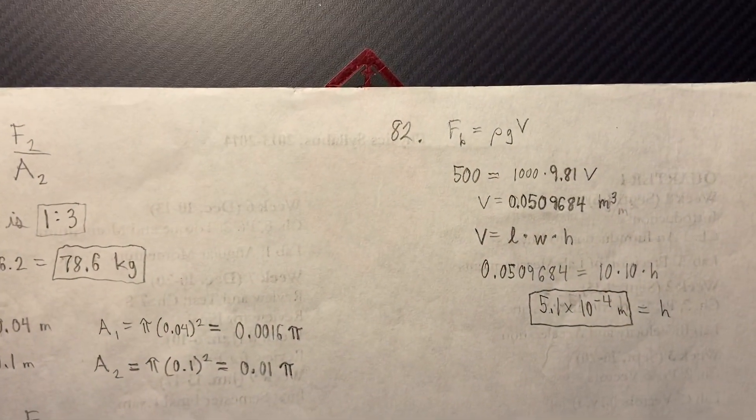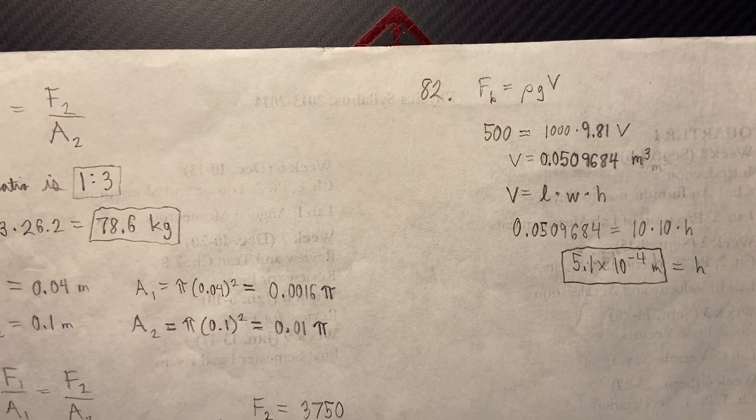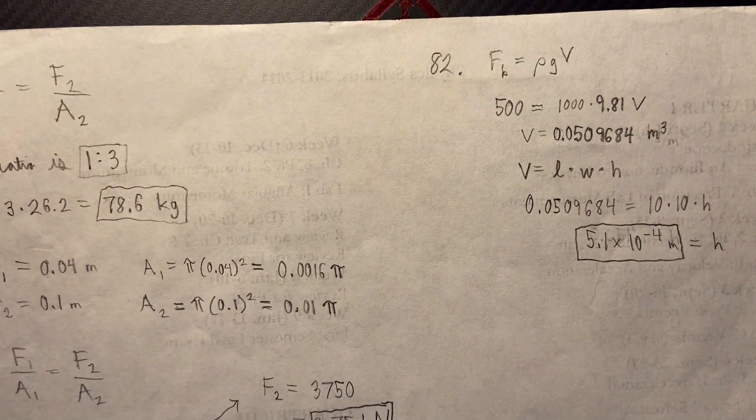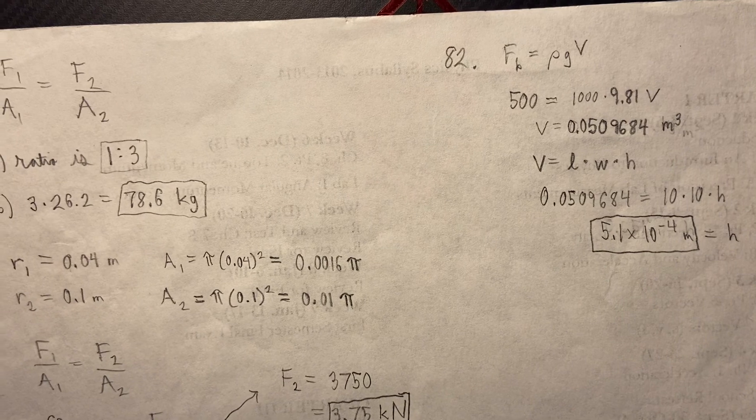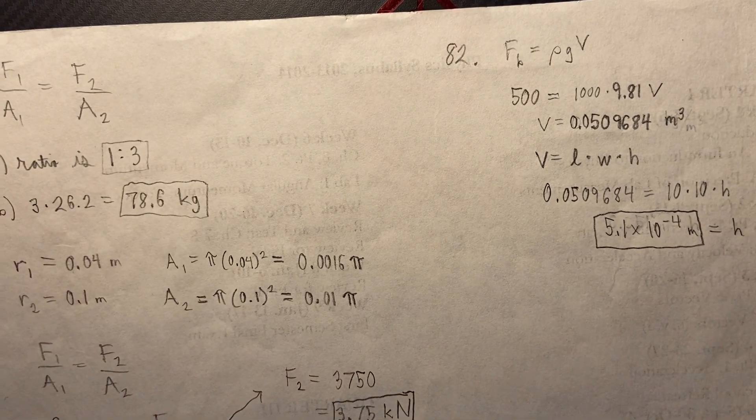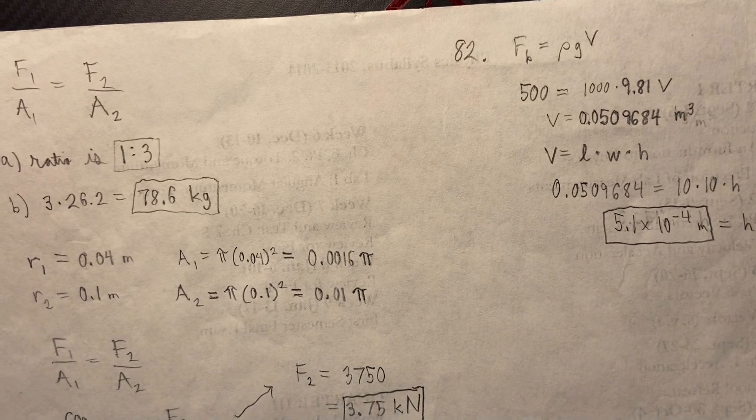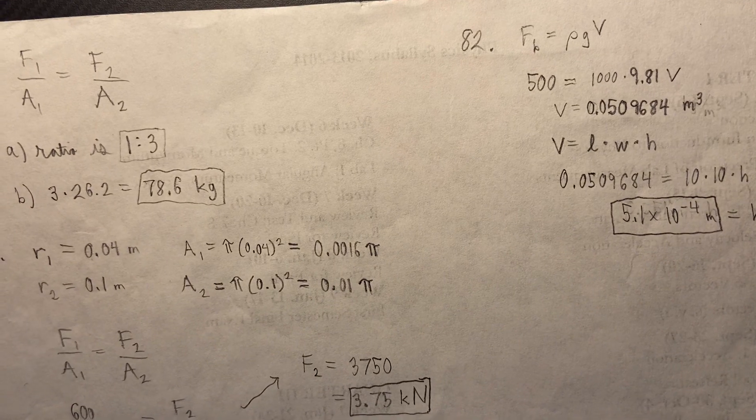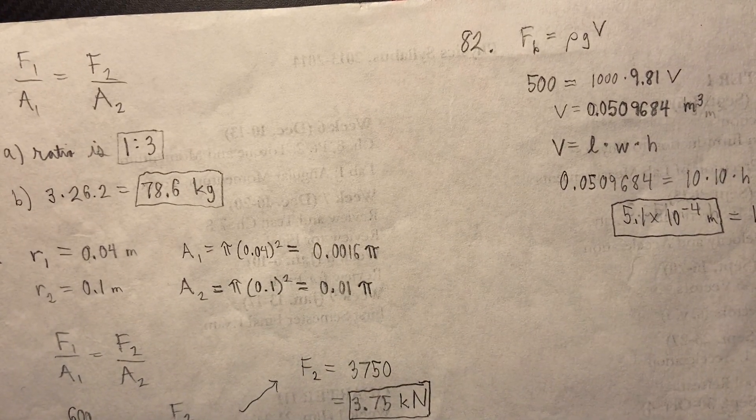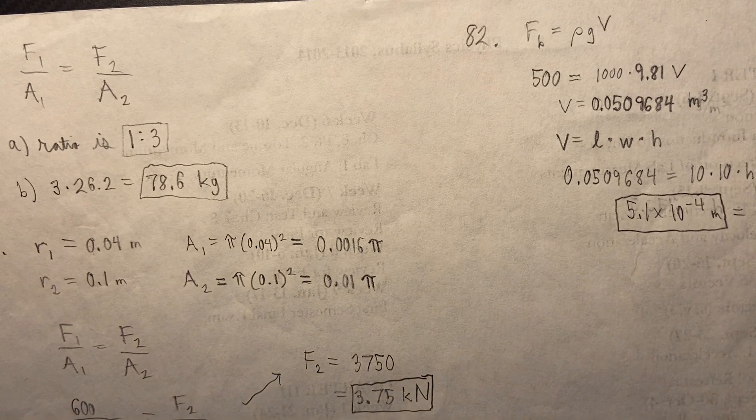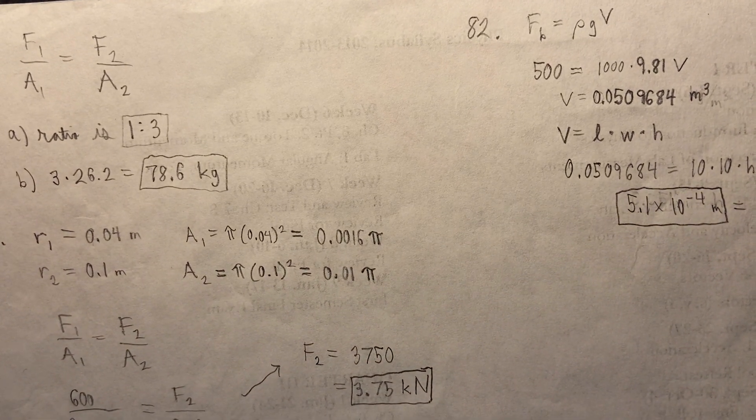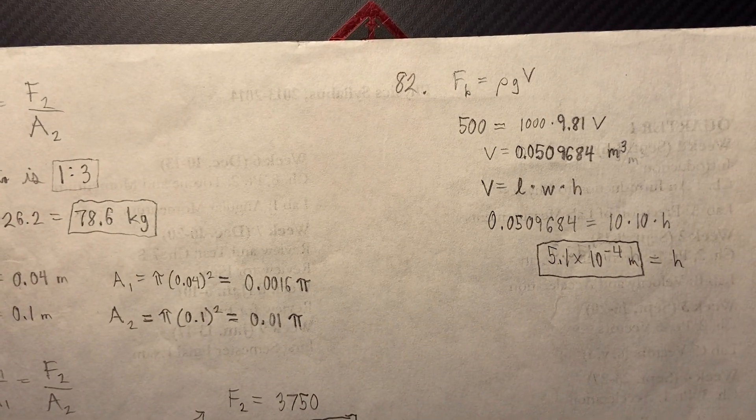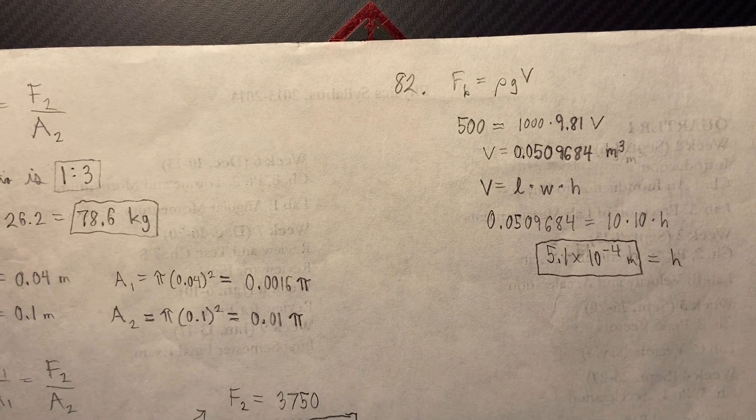Okay, number 82. Again, my buoyant force is rho gv, and I'm given the 500. I know the 1000 and the g, so I just need to find the volume. And the volume is going to be the volume of the displaced liquid. Now, since I know that the volume is length times width times height, and I know what the length and width are, I can use that information to solve for the height, the height of the displaced liquid. And so that's going to be 5.1 times 10 to the negative 4th meters.